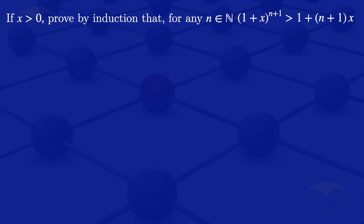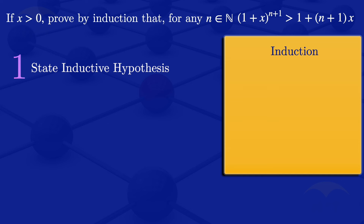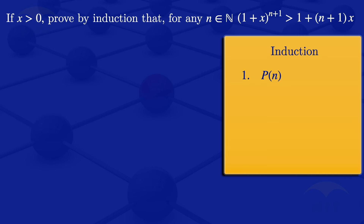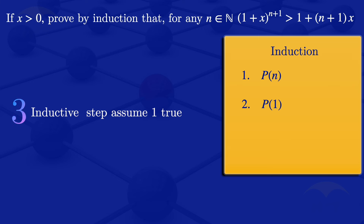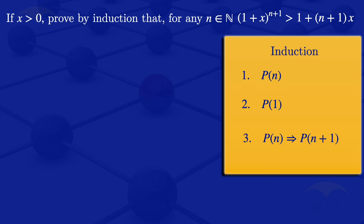To prove this using mathematical induction, I'll look at the following steps. The first step is to state our inductive hypothesis — what we want to prove — which we'll call P(n). The next step is to prove the base case. Since we are looking at natural numbers and we start counting at 1, we want to prove P(1). Then step three is proving that if P(n) is true, then P(n+1) is true. I'll start with step one: stating our inductive hypothesis P(n).